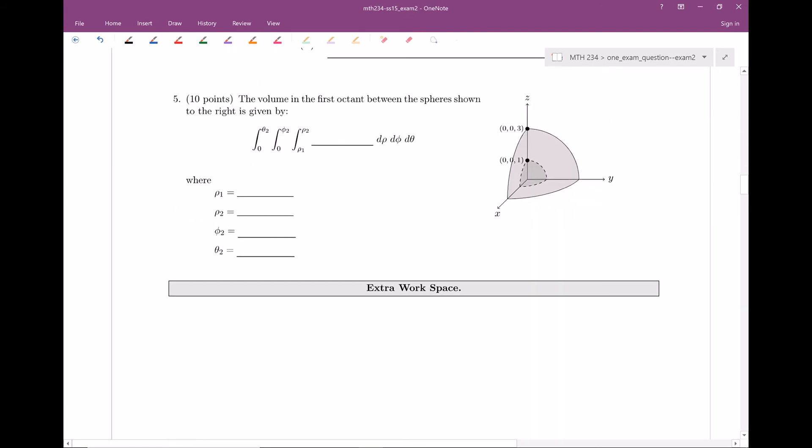The volume in the first octant between the spheres shown to the right is given by, and it looks like we have a fill in the blanks. So this is back when they were actually doing fill in the blanks, but you could imagine a very similar problem to this as a free response sort of deal, where it says to set up an integral, but do not evaluate a triple integral that represents the volume of such a structure here.